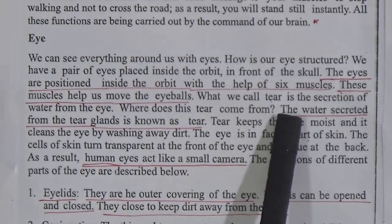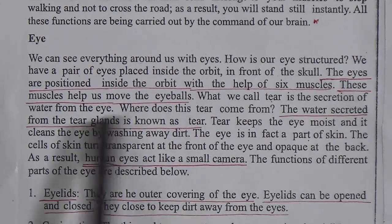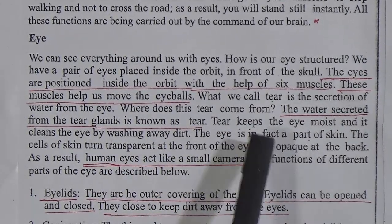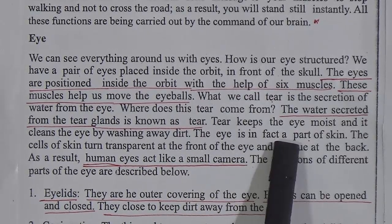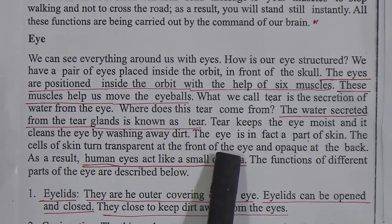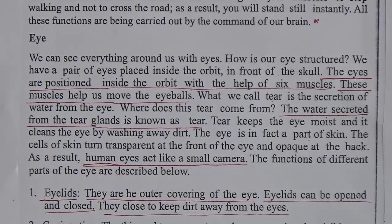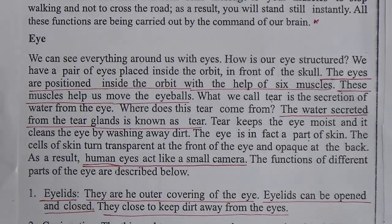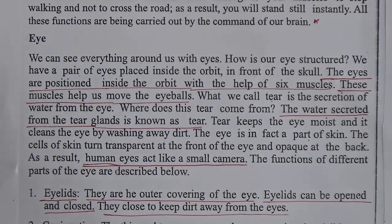These muscles help us move the eyeballs. What we call a tear is the secretion of water from the tear glands. Tears keep the eye moist and clean the eye by washing away dirt. The eye is in fact a part of the skin — the cells of the skin turn transparent at the front of the eye and opaque at the back. As a result, human eyes act like a camera.